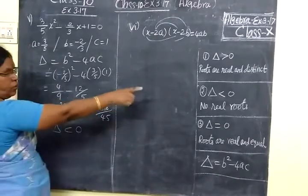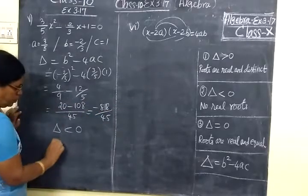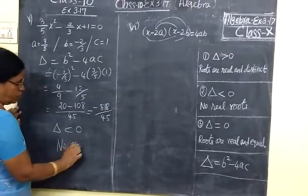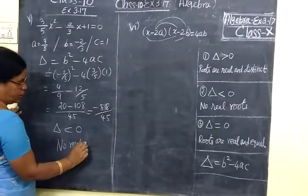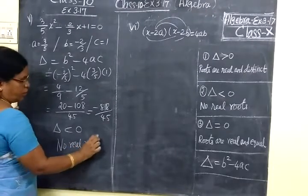So this is less than 0. Since it is less than 0, we take the second condition: no real roots. The roots are not real, they are imaginary.